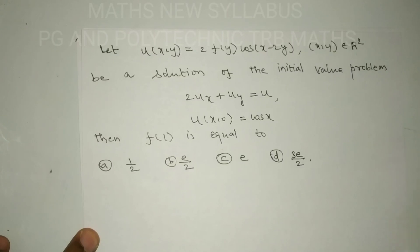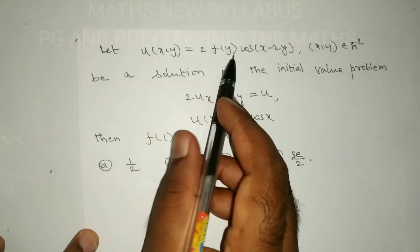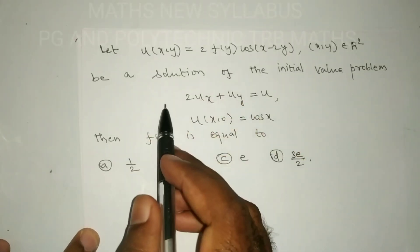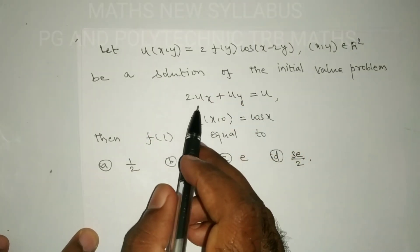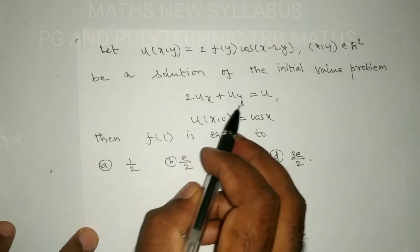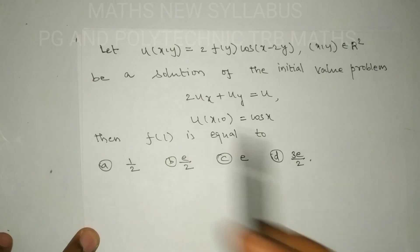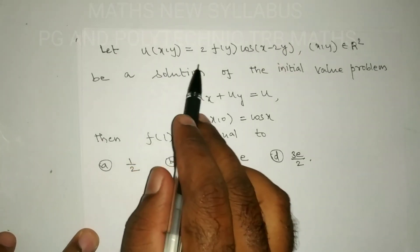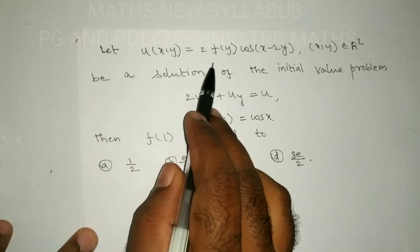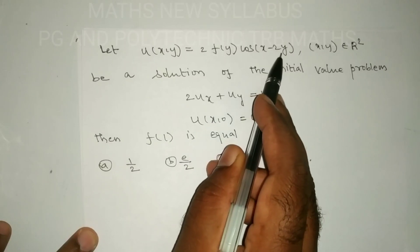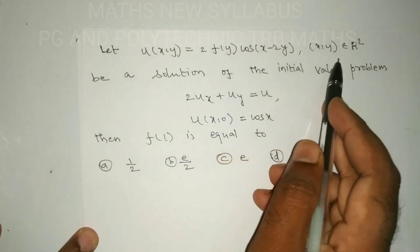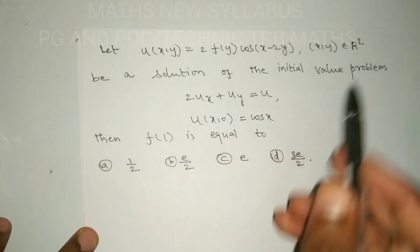So u is the solution of the partial differential equation 2 times u_x plus u_y equal to u, with initial condition u(x, 0) equal to cos x. The general solution given is u equal to 2 times f(y) into cos(x − 2y) for all x, y in R².